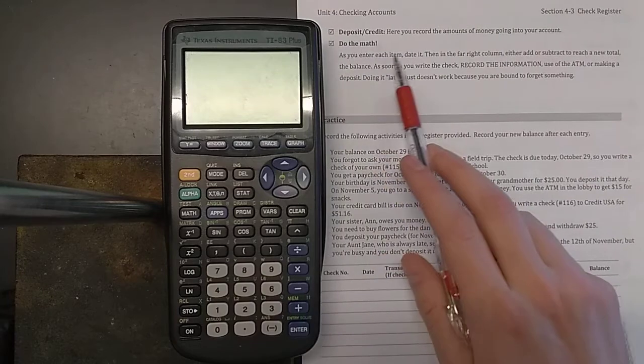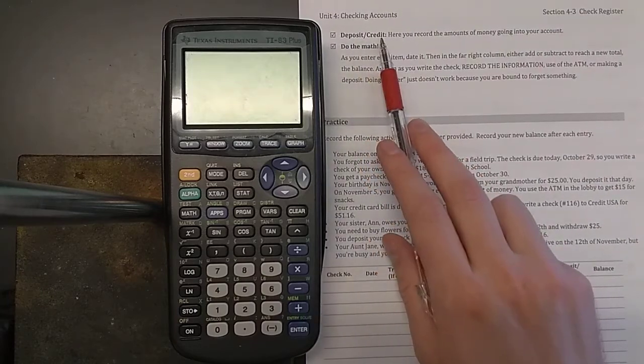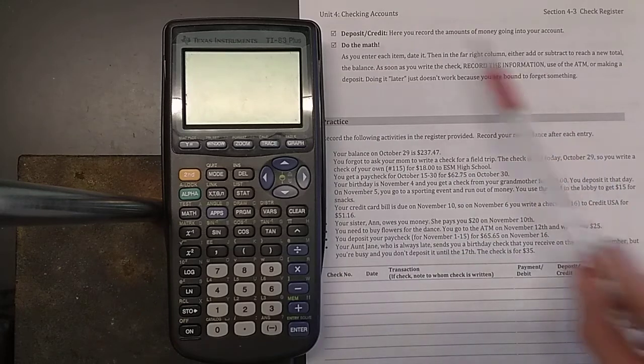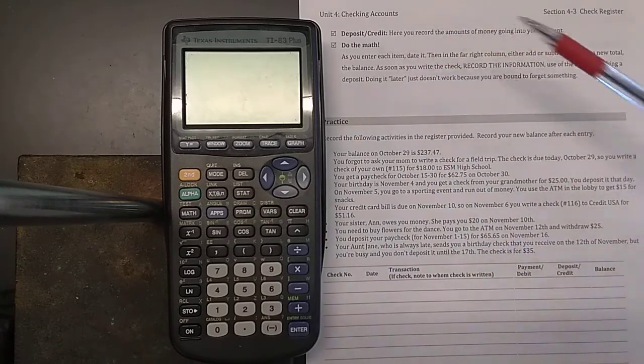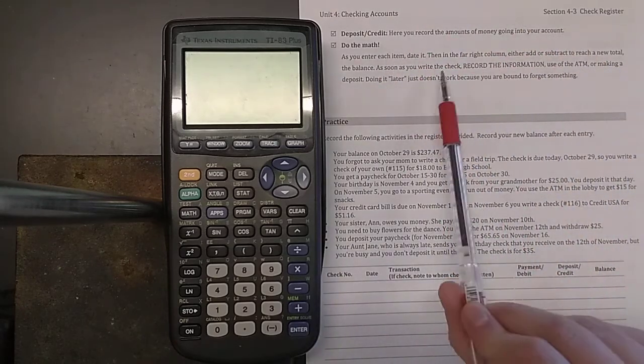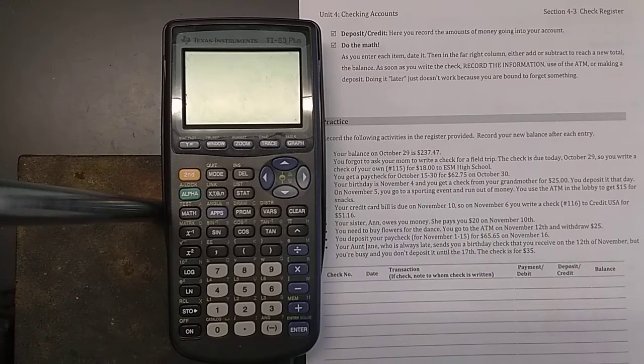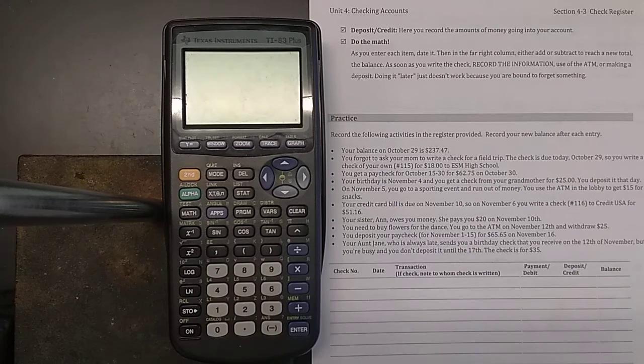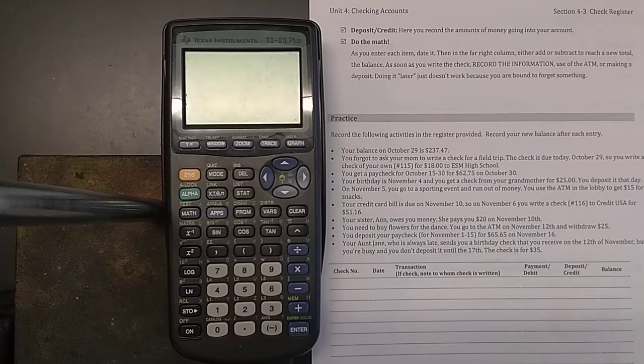And then finally, there's two other columns. One for deposit and credit. Here's amounts of money that go into your account. And then finally, there's a column all the way on the far right called the balance. This is where you actually figure out what your new balance is based on those equations that I showed you earlier. If money's coming into your account, you add it. If money's coming out of your account, you subtract it.